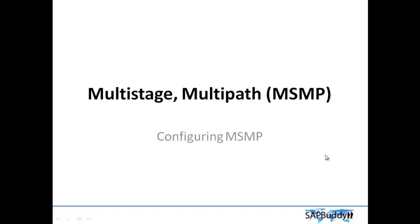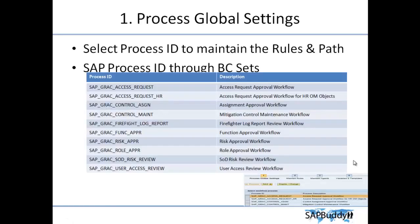Hello everyone, welcome to the next session of SAP GRC Access Control. In this session we will be looking at the detailed configuration of MSMP. The first stage is Process Global Setting, where we will select the Process ID of the MSMP configuration we are trying to maintain. There are many defined processes delivered by SAP using BC sets.